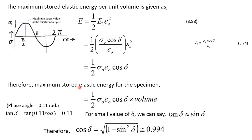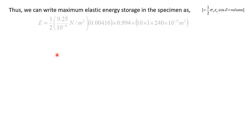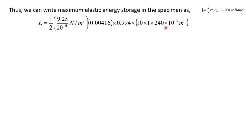Now we can calculate the maximum elastic energy storage in the specimen. Using the equation U = half times sigma naught times epsilon naught times cos delta times the volume of the specimen: sigma naught is 9.25 megapascal (converted to Newton per meter squared), epsilon naught is 0.00416, cos delta is 0.994, and the volume of the specimen in cubic meters uses the dimensions converted from millimeter. This gives a value of 0.049 joule for the maximum elastic energy storage in the specimen.